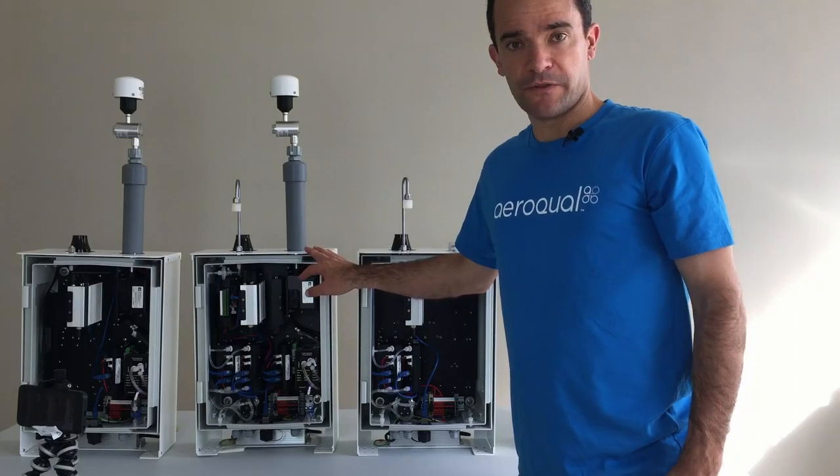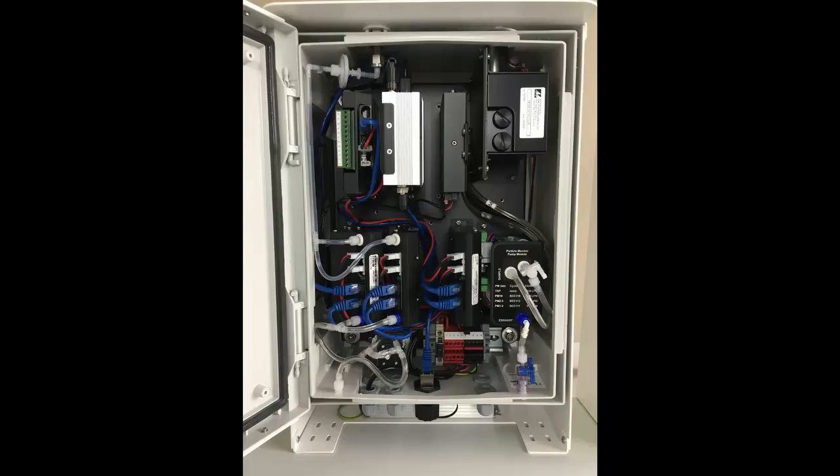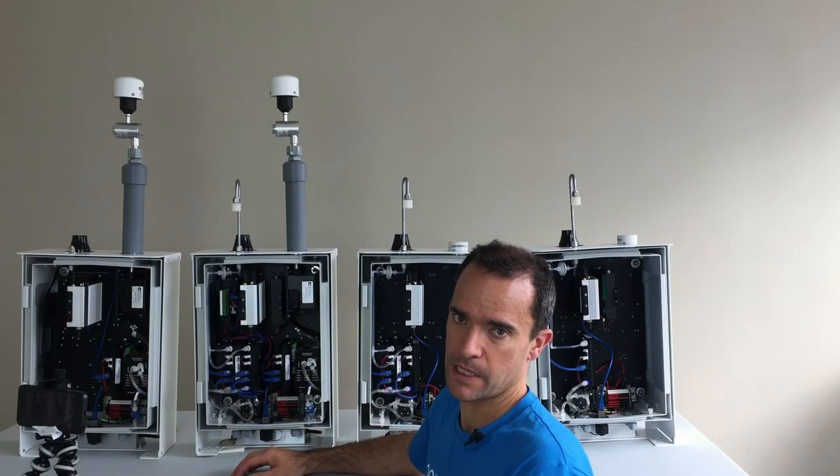Here we have an AQS1 which is configured with everything. So we have the nephilometer engine, we have the ozone module, we have the ox module, we have the auxiliary module for a weather station and of course the central PC. So this is a fully configured AQS1 with gas and with PM.